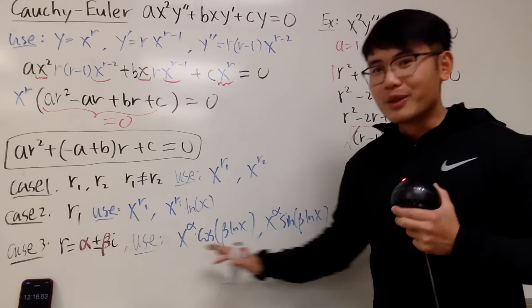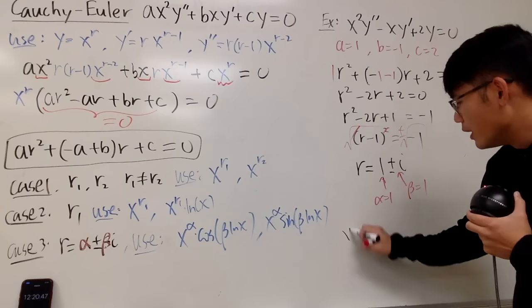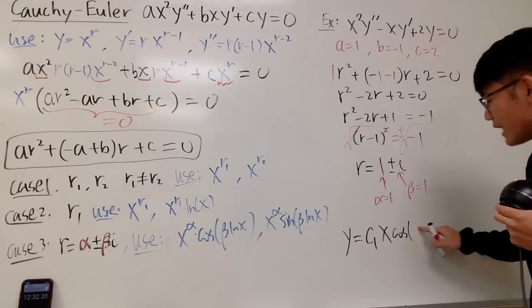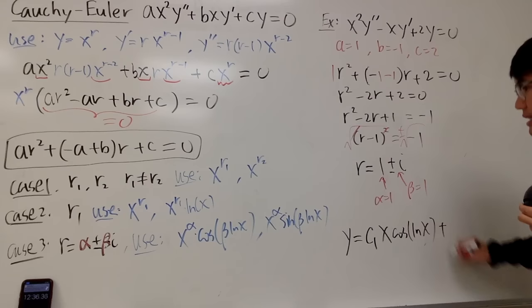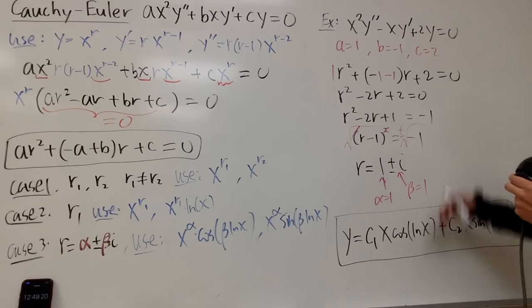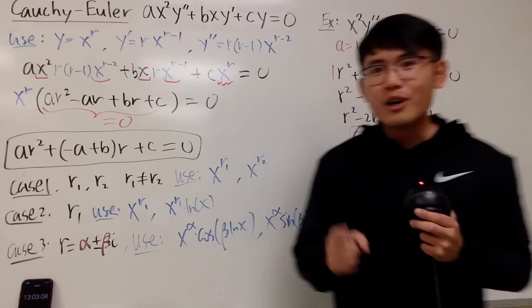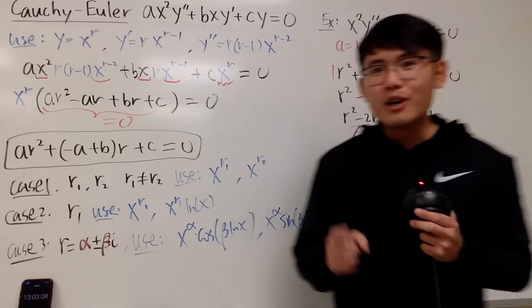Since α = 1 and β = 1, we use the complex case building blocks. The general solution is: y = c₁·x·cos(ln x) + c₂·x·sin(ln x). That's the general solution to this differential equation. Hopefully you liked this video — leave a comment below if you have questions, and subscribe if you're new to the channel!